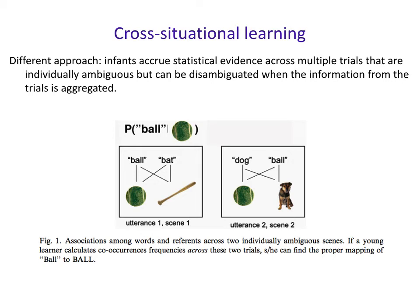Another idea for how infants figure out what words mean is called cross-situational learning. The idea is that infants are accruing statistical evidence across multiple trials that individually are ambiguous, which is what this picture here is demonstrating. In that first trial, if you say the word 'ball' and 'bat' together, you don't really know which one maps to which. And in the second trial if you say 'dog' and 'ball', you don't know which word maps to which object. But if you take them together, you can figure out that the word 'ball' maps to the ball object because it's the only one present in both. So individually ambiguous trials can be disambiguated when the information from the trials is aggregated in this way.